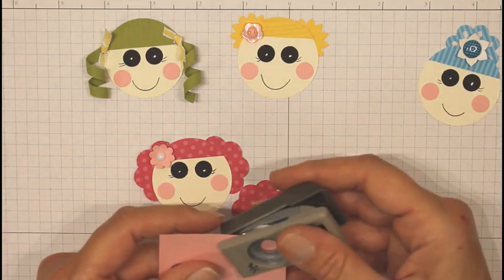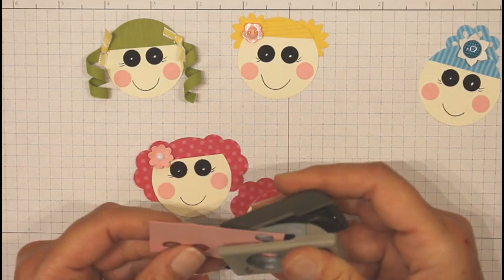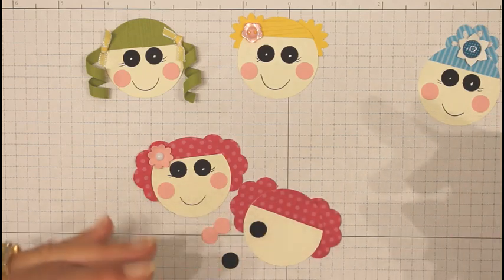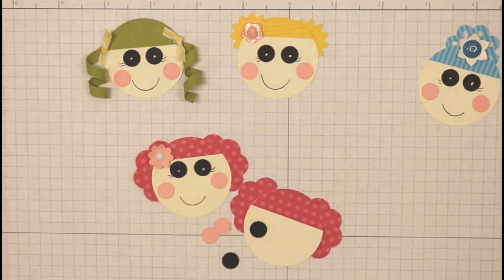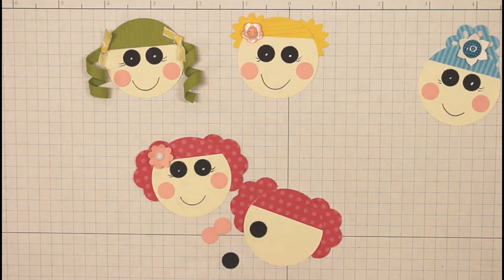And then for the cheeks, I've got a piece of Pretty Pink cardstock. I'm going to punch out two of those. I'm going to attach the eyes first.